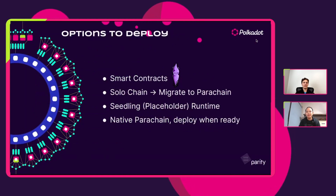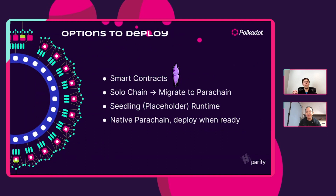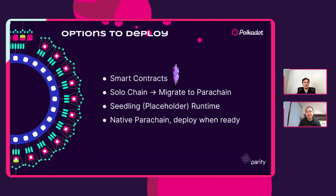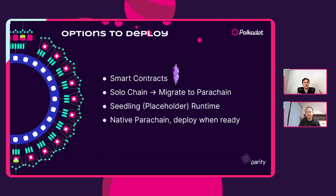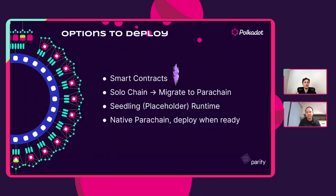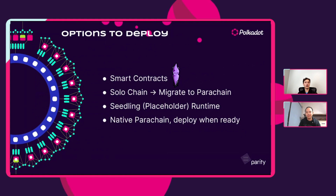There are actually a lot of options to deploy. The first is the simplest, cheapest, and quickest way — just deploying a smart contract. Ink is the substrate-native WASM-based smart contract language. You don't have to run DevOps, run collators, or get everything up and running; you just have a couple of files of code and you upload them to a chain. You can do this on parachains that have Ink available, or on Polkadot parachains that are EVM compatible, allowing you to deploy Solidity smart contracts.